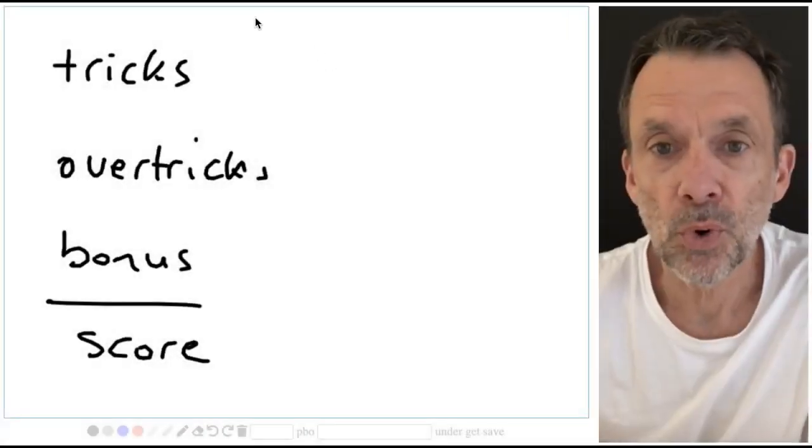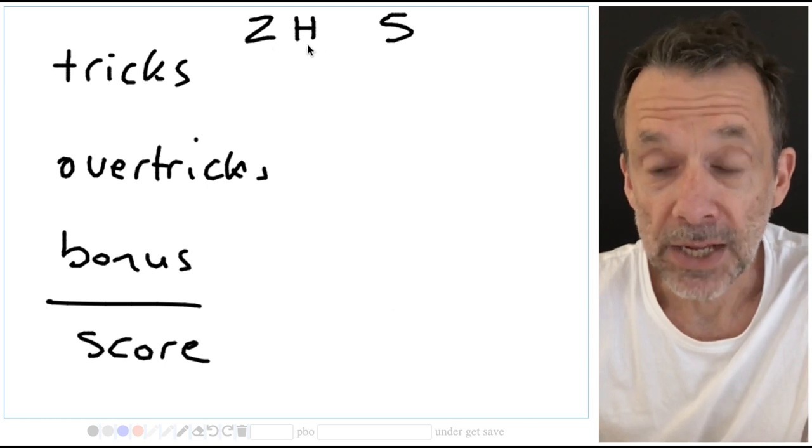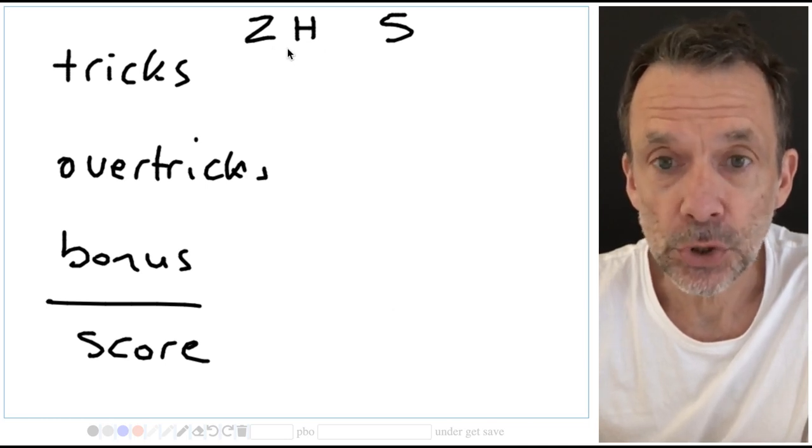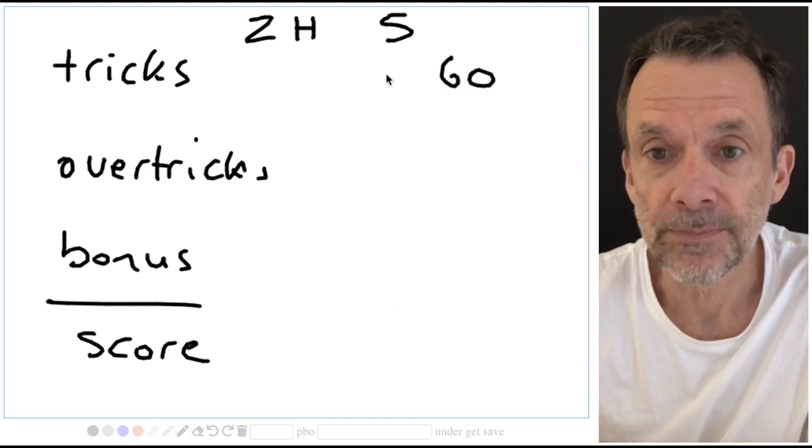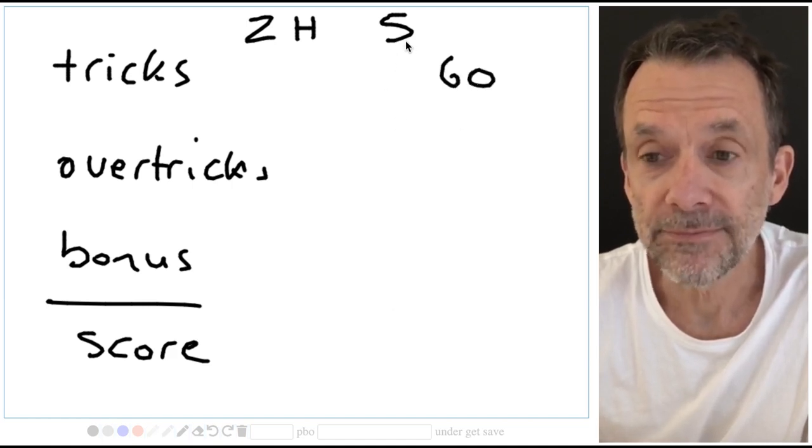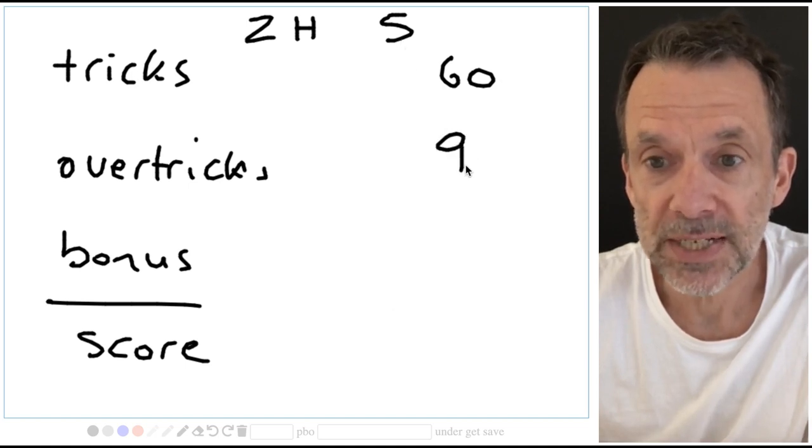Let's try one more. Let's say I'm in a contract of two hearts making five. So hearts are worth 30 points each, two hearts, 60 trick points. I made two hearts making five. So three overtricks, three extra tricks, three thirties, 90.